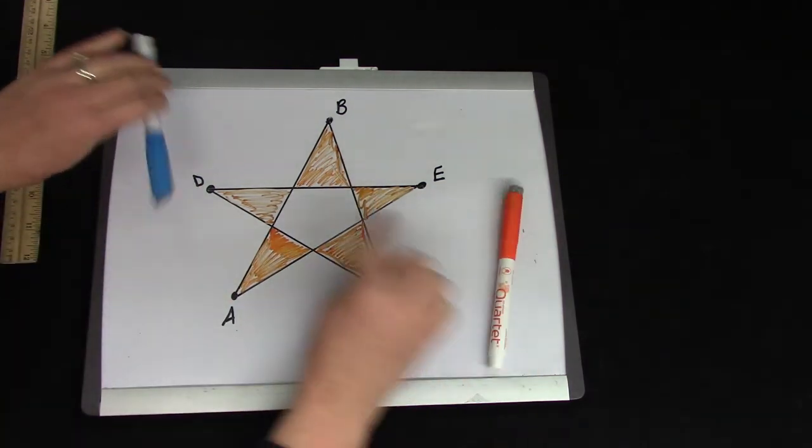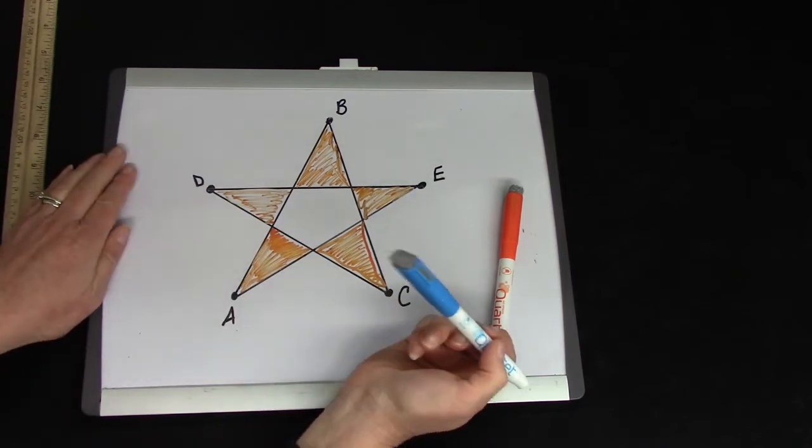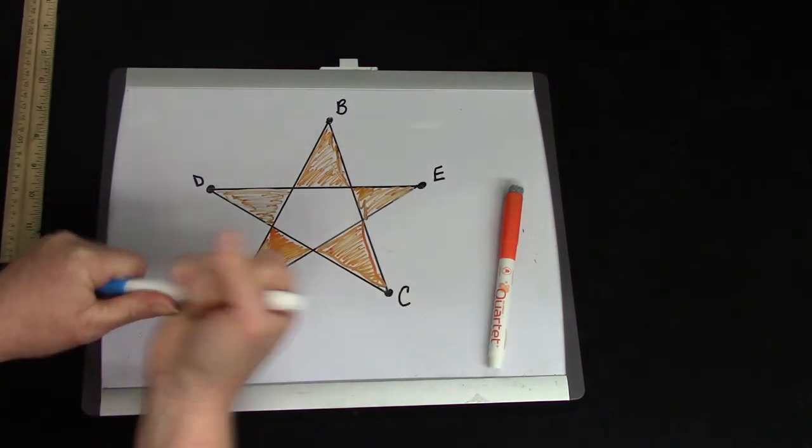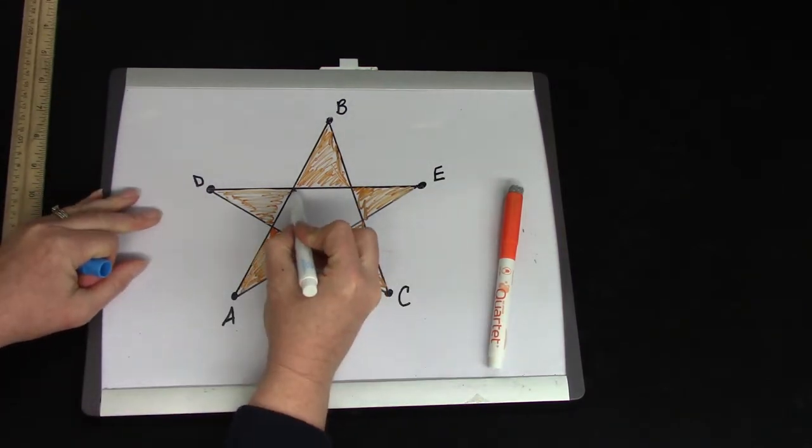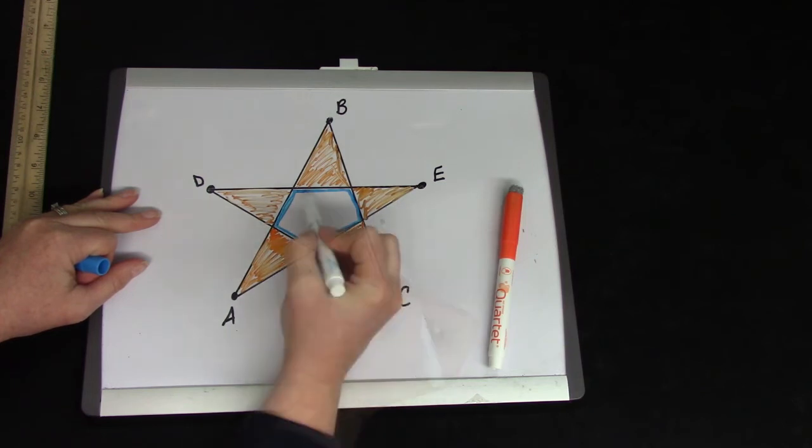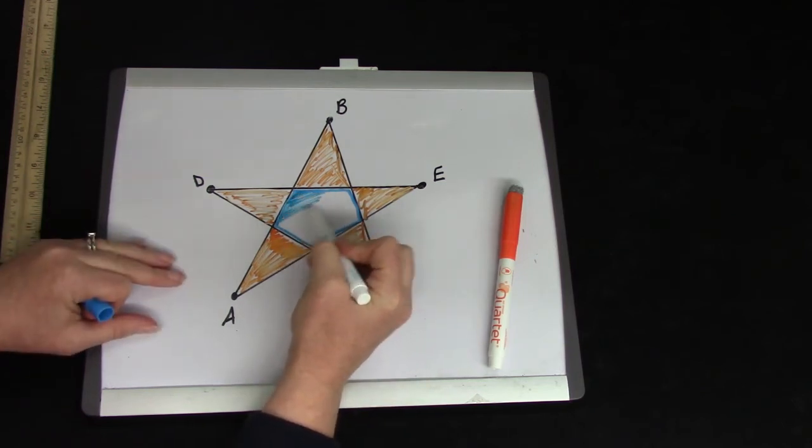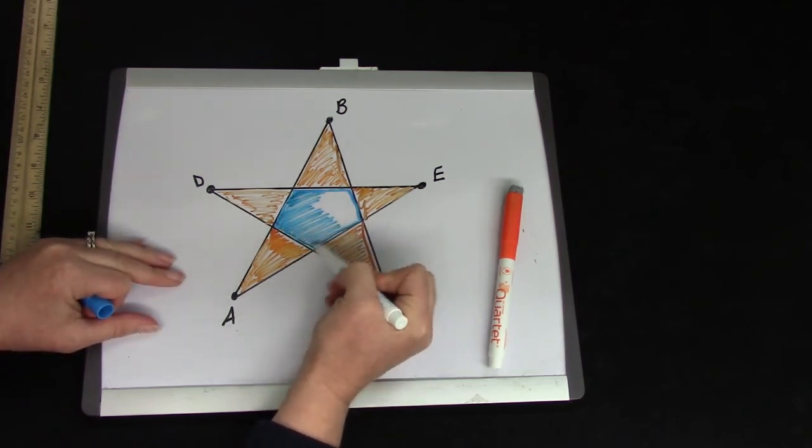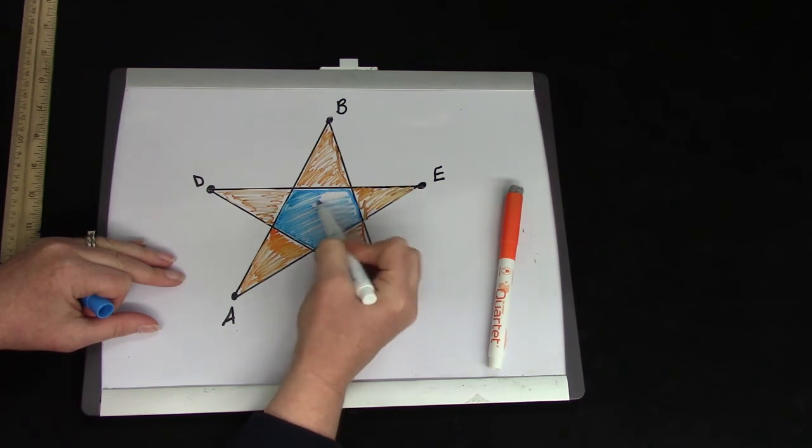What would we call this shape that's in the middle of the triangle? I'm going to color it blue. It has one, two, three, four, five sides. When a shape has five sides, do you remember what it's called? You're right, it's called a pentagon.